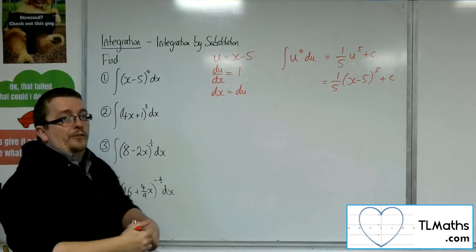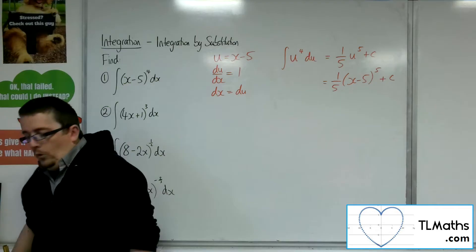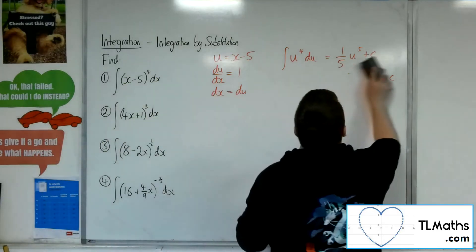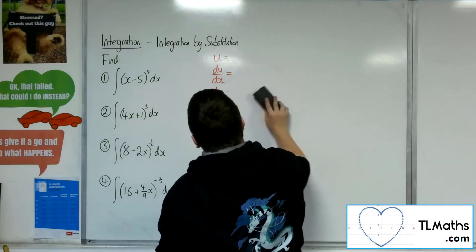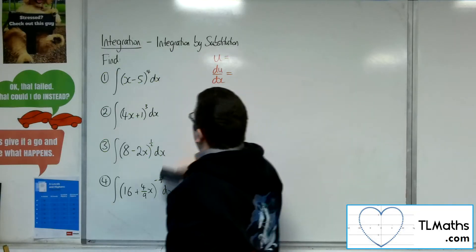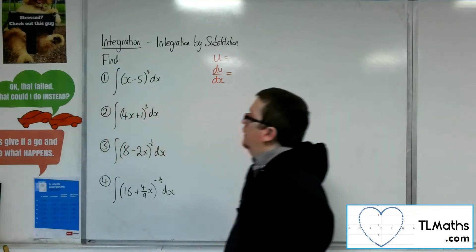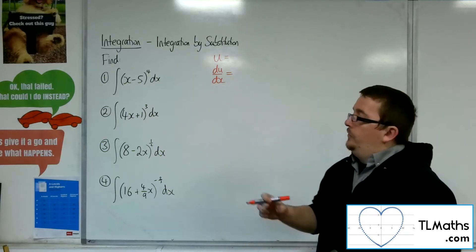So that's the first one. Now all of these examples you can do by reversing the chain rule. So this just gives you a nice mechanical method of dealing with them to avoid errors.